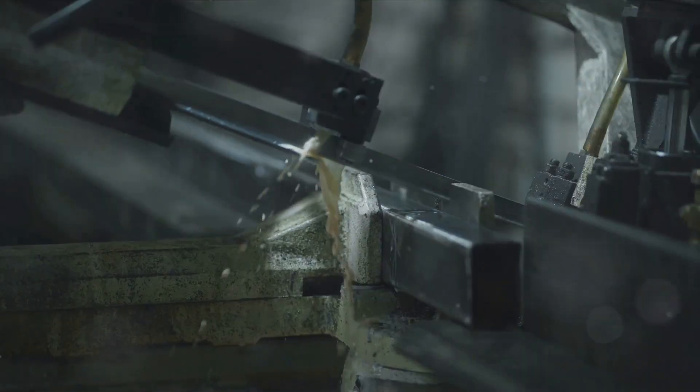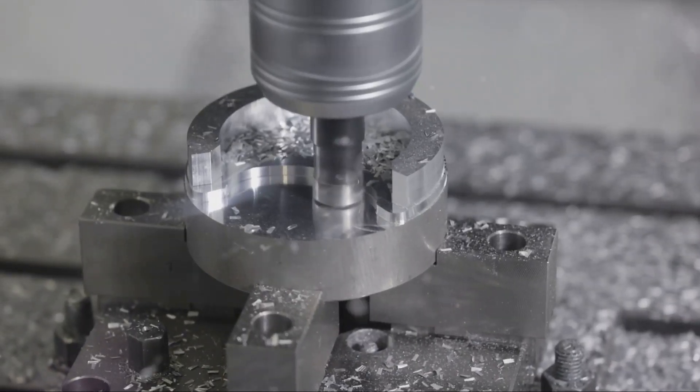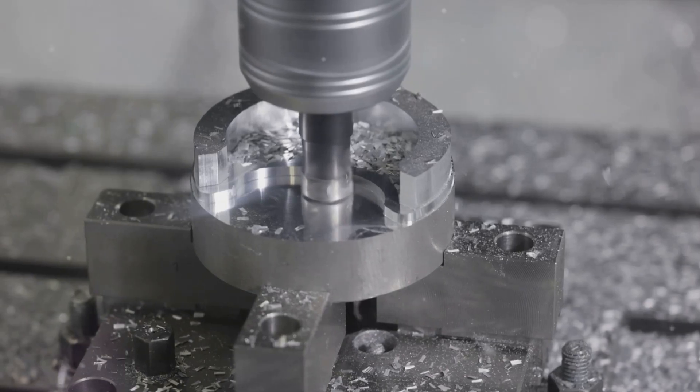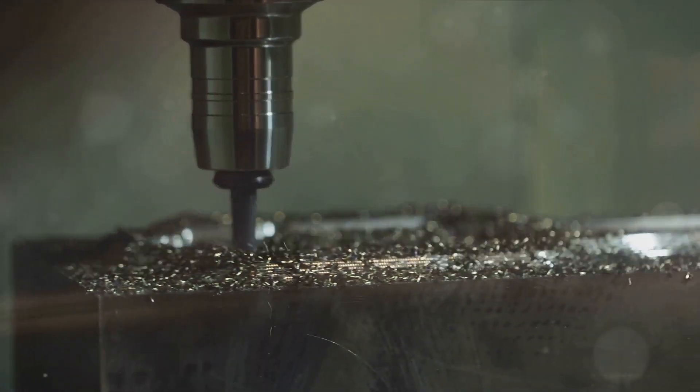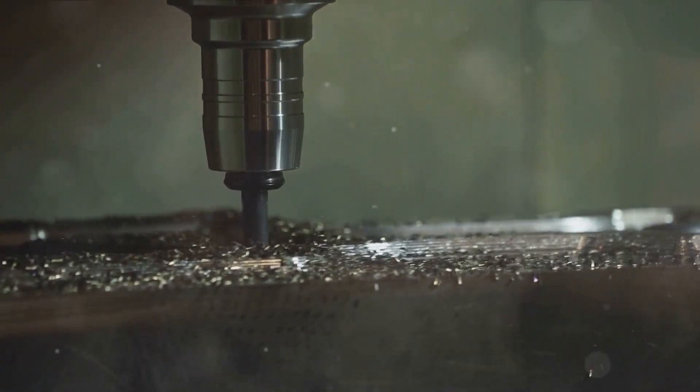Next up is the knurling machine, a specialist when it comes to adding texture to surfaces. This fascinating piece of machinery is all about creating intricate patterns on a workpiece. It does this by pressing a hardened set of wheels, known as knurls, against the workpiece, which is typically made from a ductile metal.